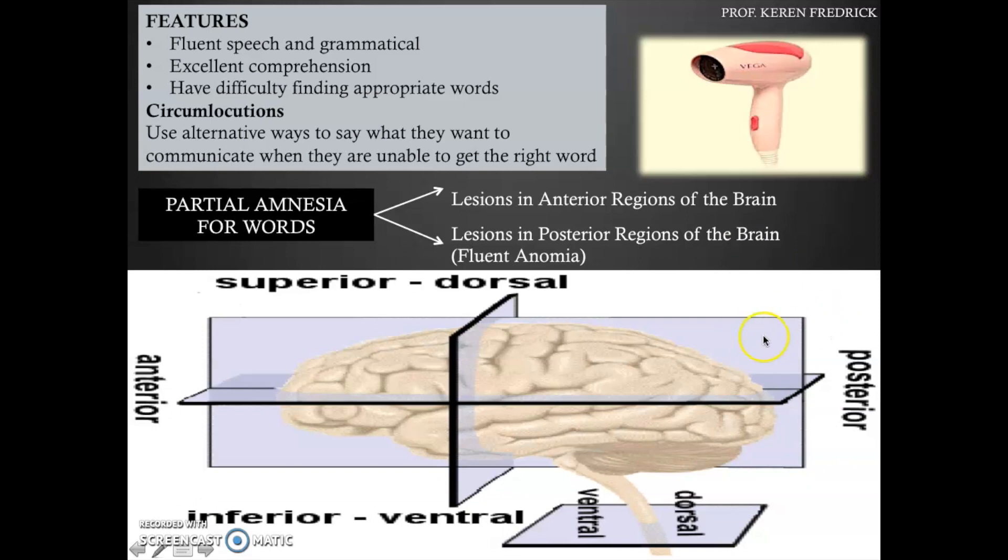When the lesion is in the posterior parts of the brain, the client is left with a fluent anomia - the client is able to speak fluently. On the other hand, if there is a lesion in the anterior regions of the brain, the client will not be able to speak fluently either.